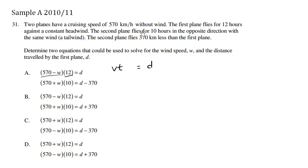The second plane flies for 10 hours in the opposite direction. So here we have a time of 10 hours, and we have the idea of an opposite direction with the same wind. So because we're going in an opposite direction we have a tailwind which makes the velocity faster, faster by w.